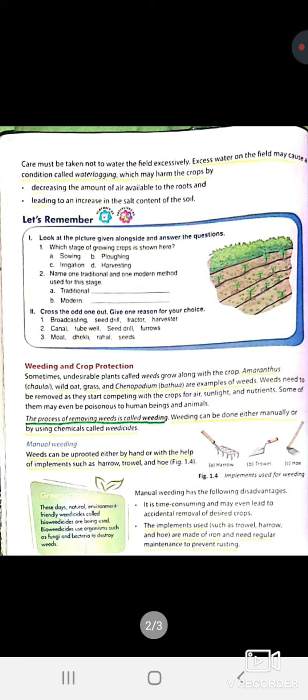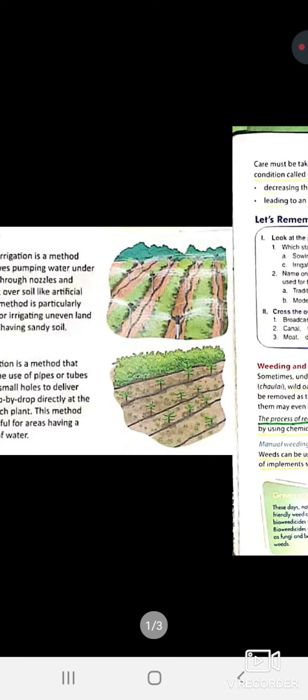It is therefore very important that whenever we eat food, we should wash the grains and vegetables before consumption. So this was the process of weeding, crop production, and irrigation. In our next video we are going to discuss harvesting and so on. Thank you for watching this video. Please like, share, and subscribe to my channel.